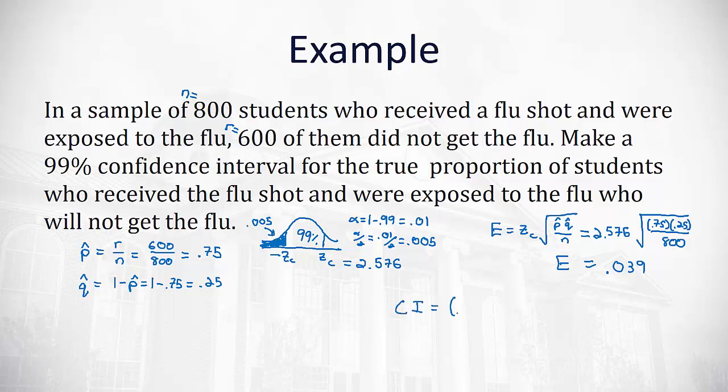So for our confidence interval, we'll take the proportion we found and subtract the error for the lower bound, and add the error for the upper bound. The proportion we found was 0.75. When we subtract 0.039, we get a lower bound of 0.711.